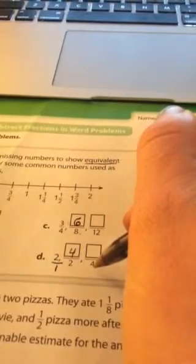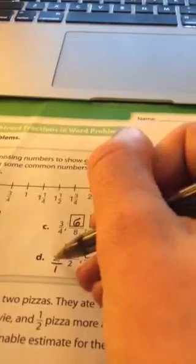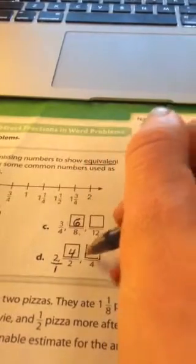1 times what number gives us 4? 4. So 2 times 4 is... And it goes right here.